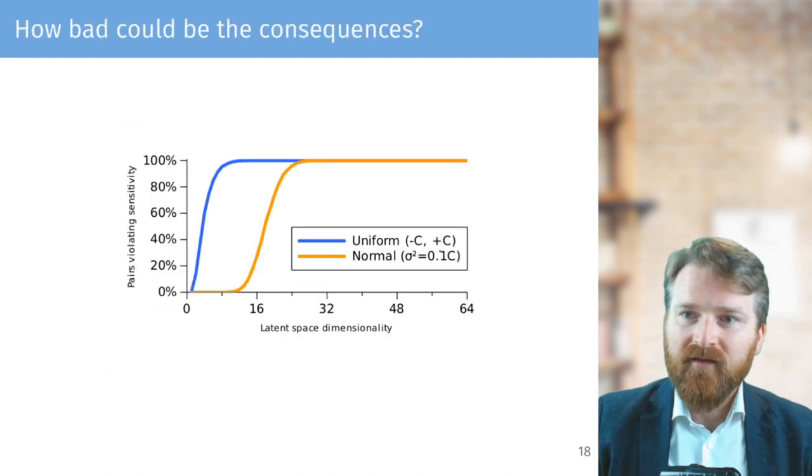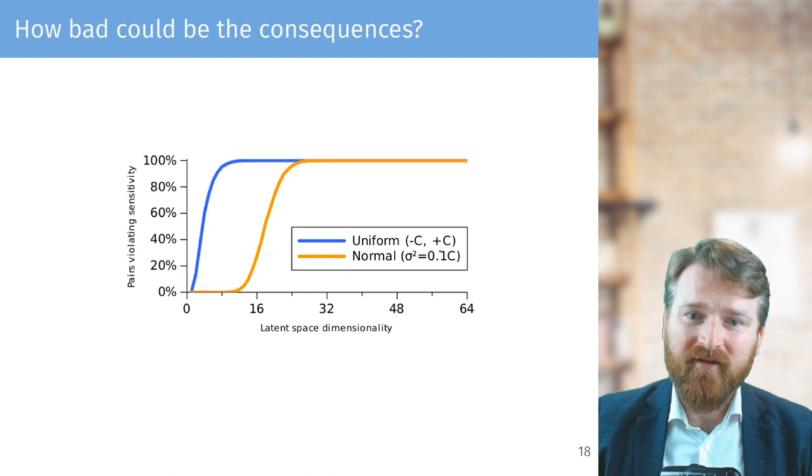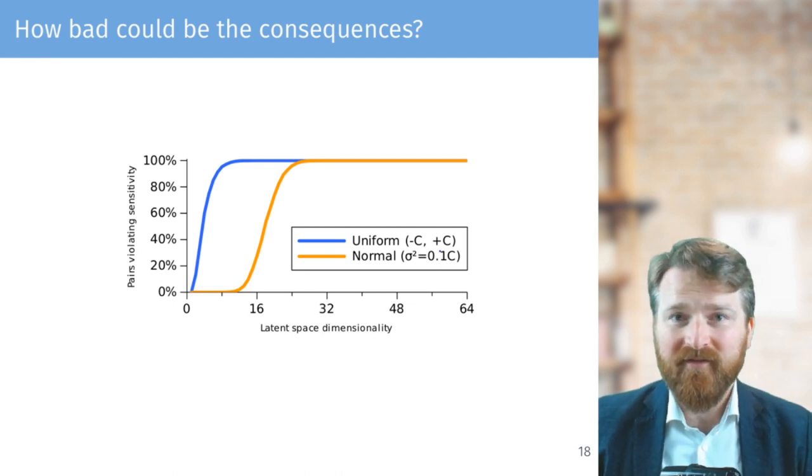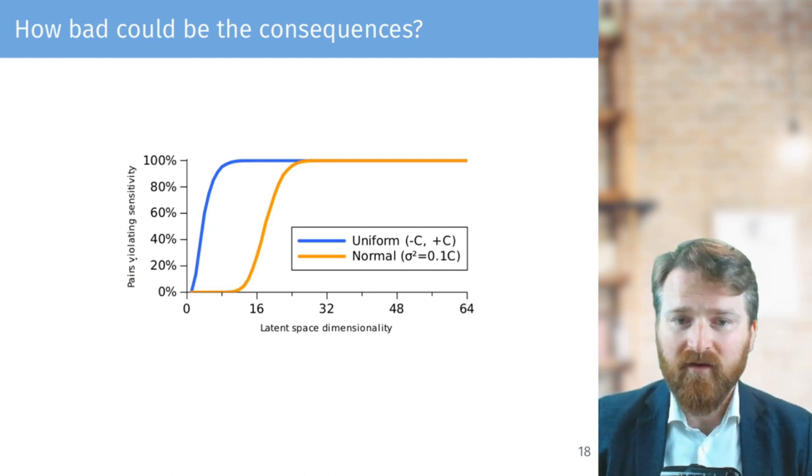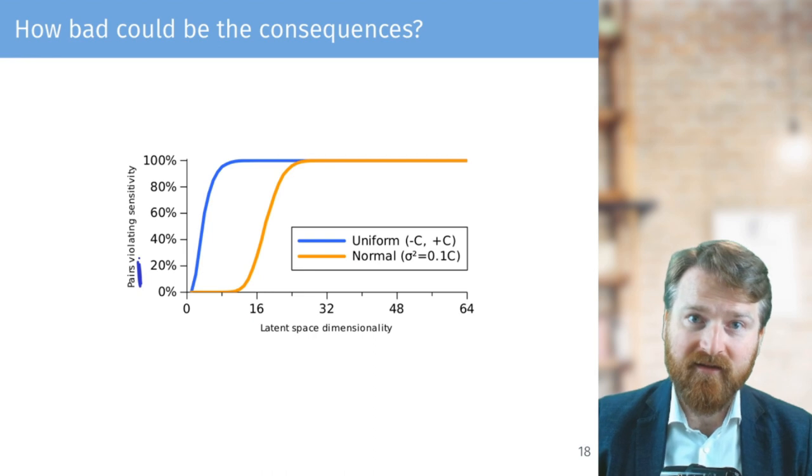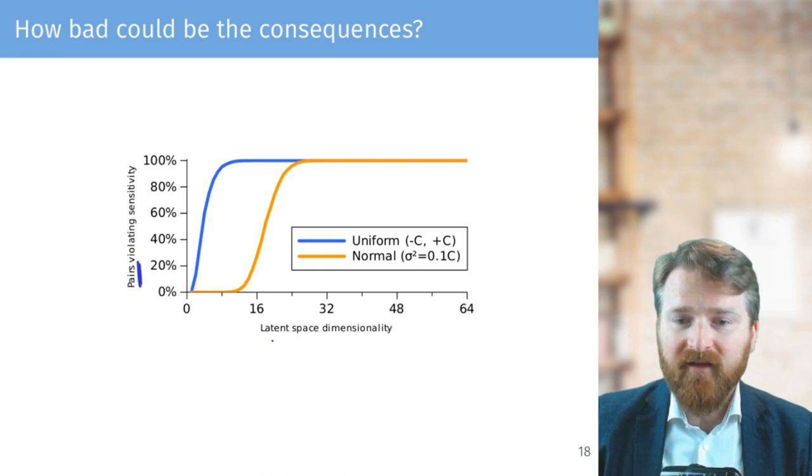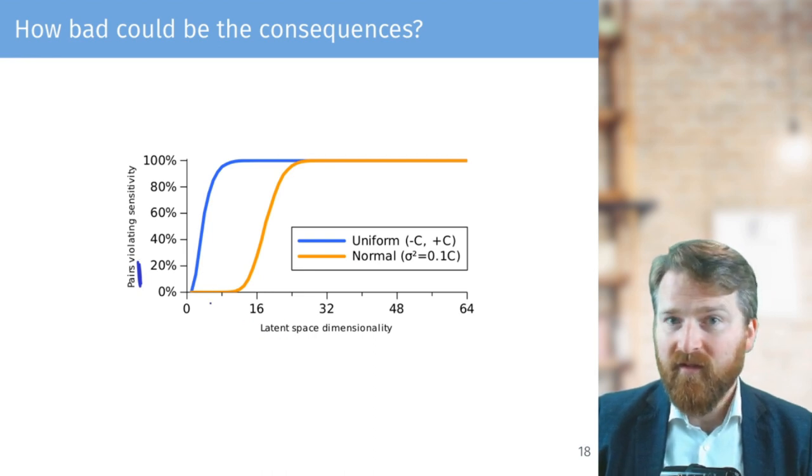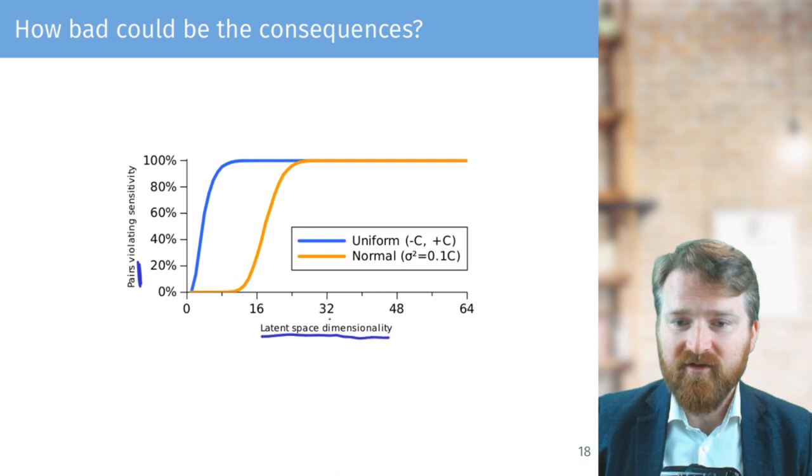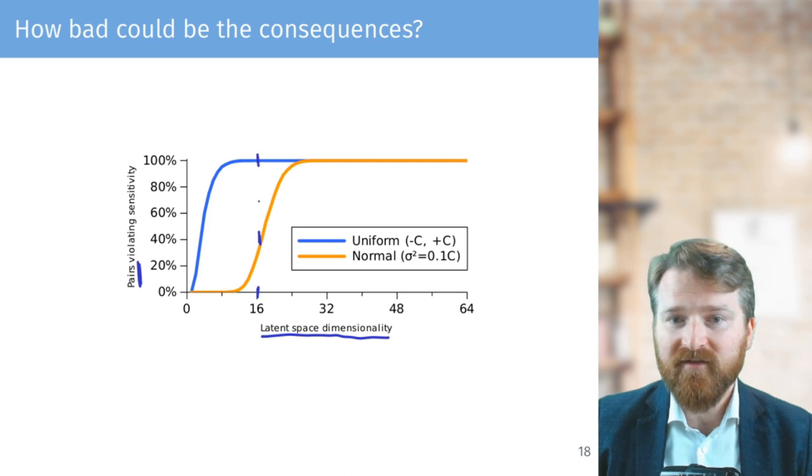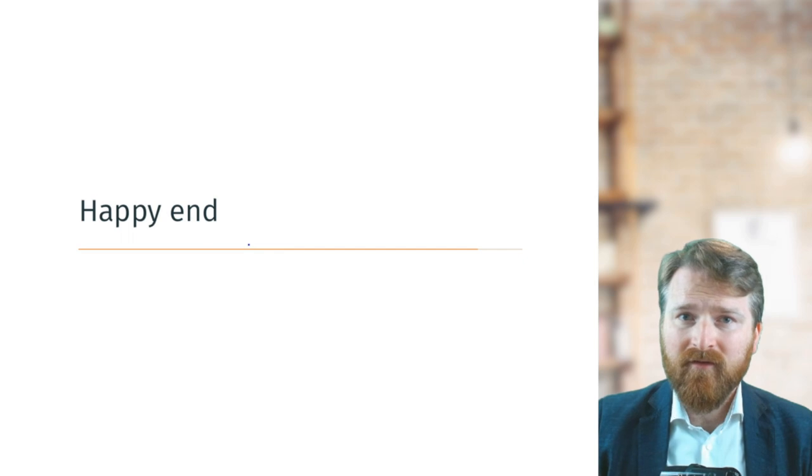So we are interested in how bad the consequences can be on preserving the privacy of the data points. And here we were counting the number of pairs of data points that could violate the sensitivity and leak some privacy. And when we have even little latent space dimensionality—so small vectors of 16—we might be leaking something between 40 and 100% of the pairs in the dataset. So we show that AdePT was not differentially private.